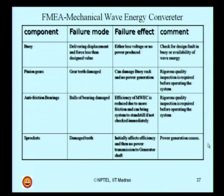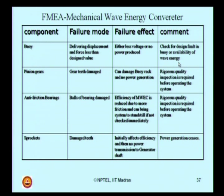Can I simply tabulate what I discussed in the previous slide? What are the components, what are all the failure modes, what are their effects, and what is the comment? I will explain only one for your understanding — the buoy. The buoy has a failure of delivering displacement and force lesser than the designed value. The effect is either less voltage will be produced or no power at all. The comment: check the design fault in the buoy or availability of wave energy. For example, the buoy should move up and down, and that is possible only when you have a specific amount of wave energy present in the sea state. If the wave height is not sufficient or the wave period is not adequate, the buoy movement may be very less, and no power is generated.